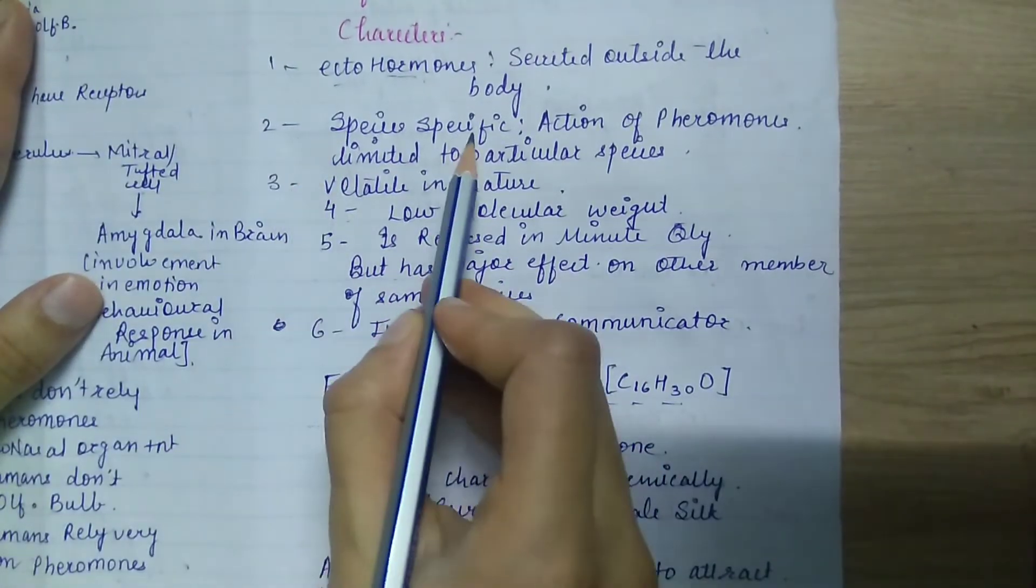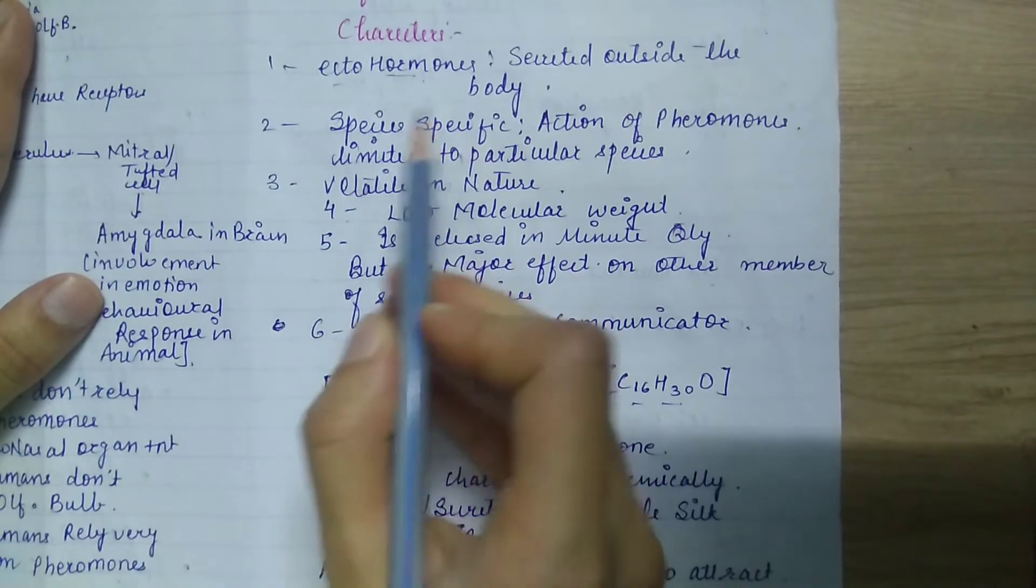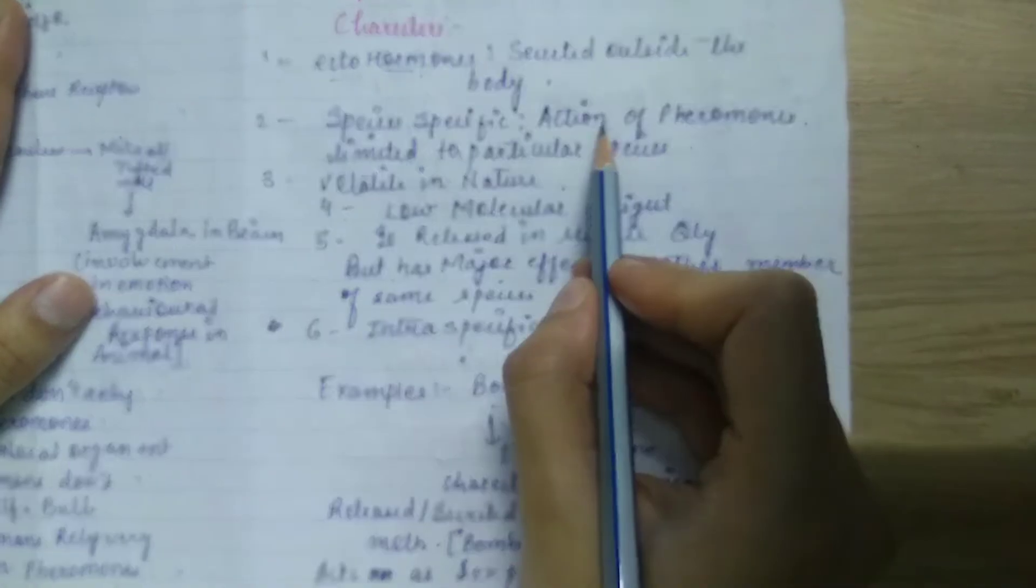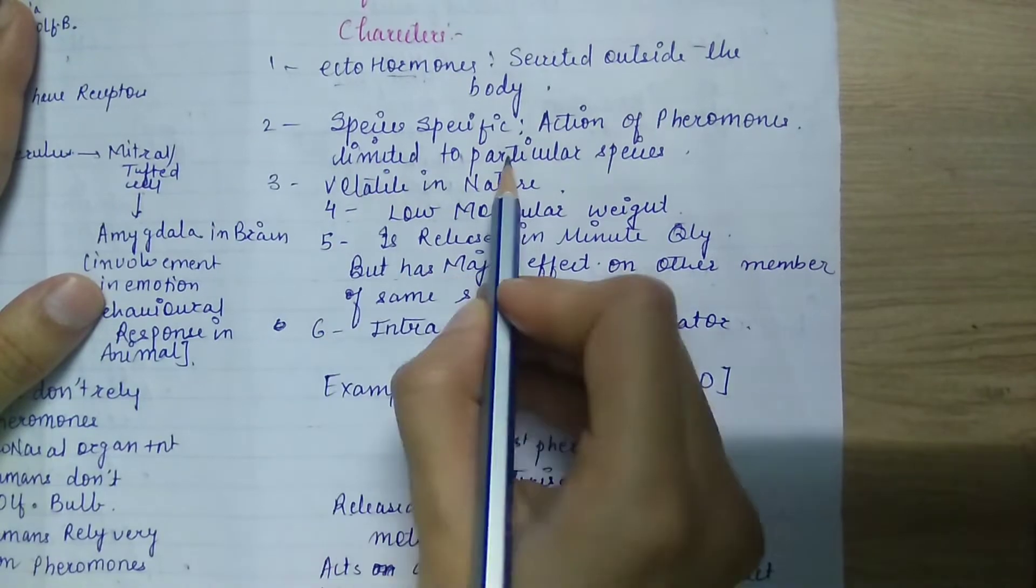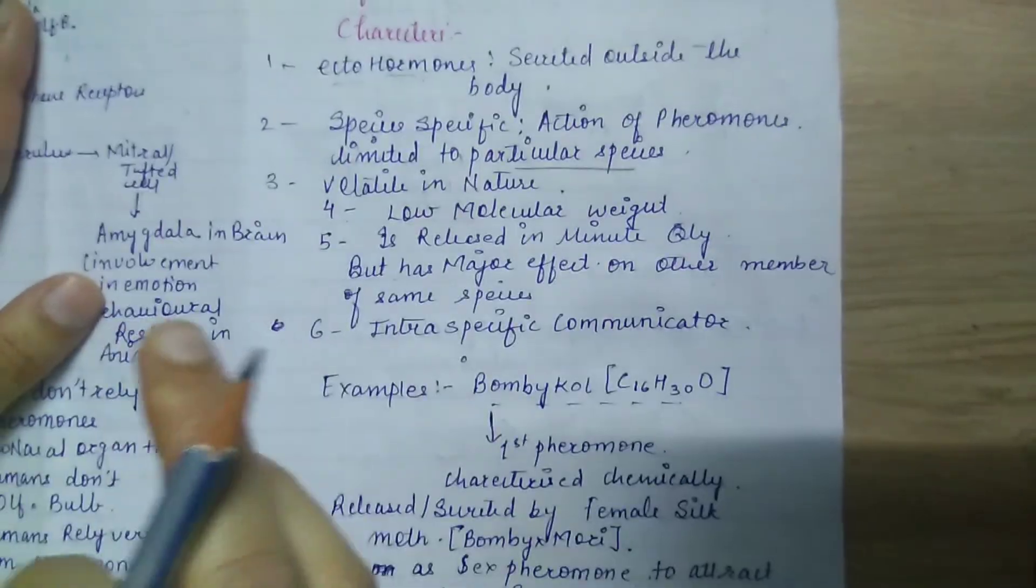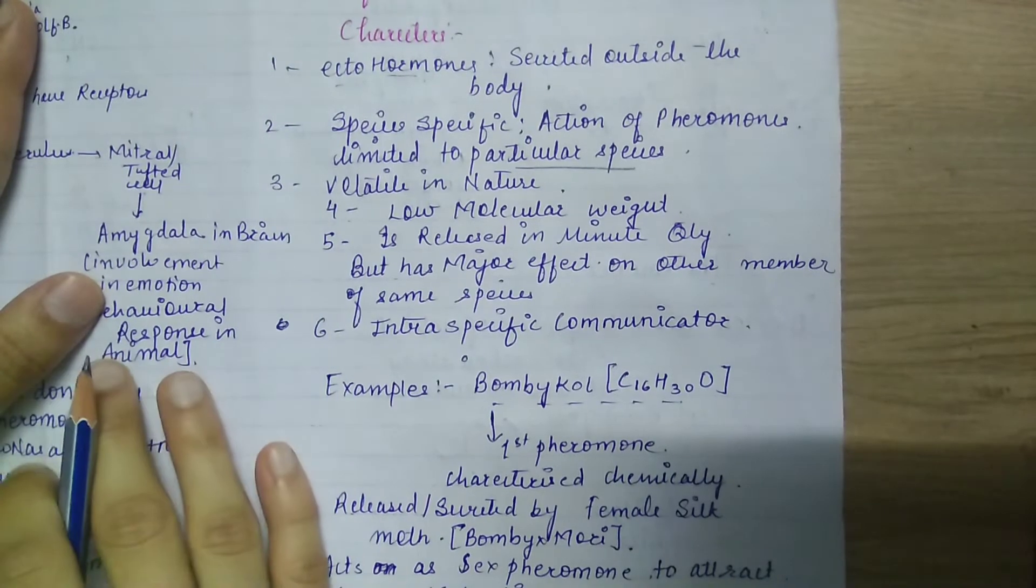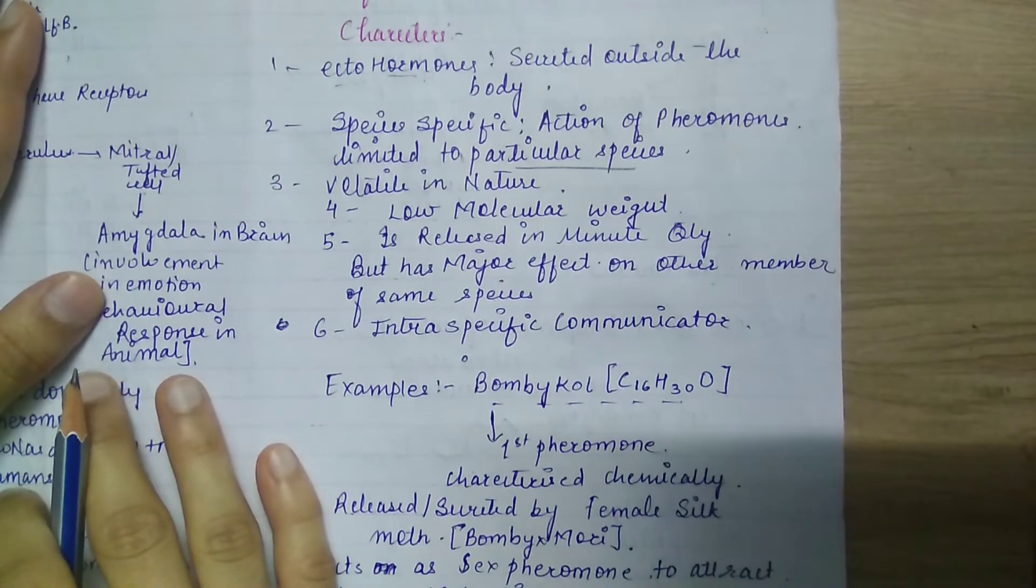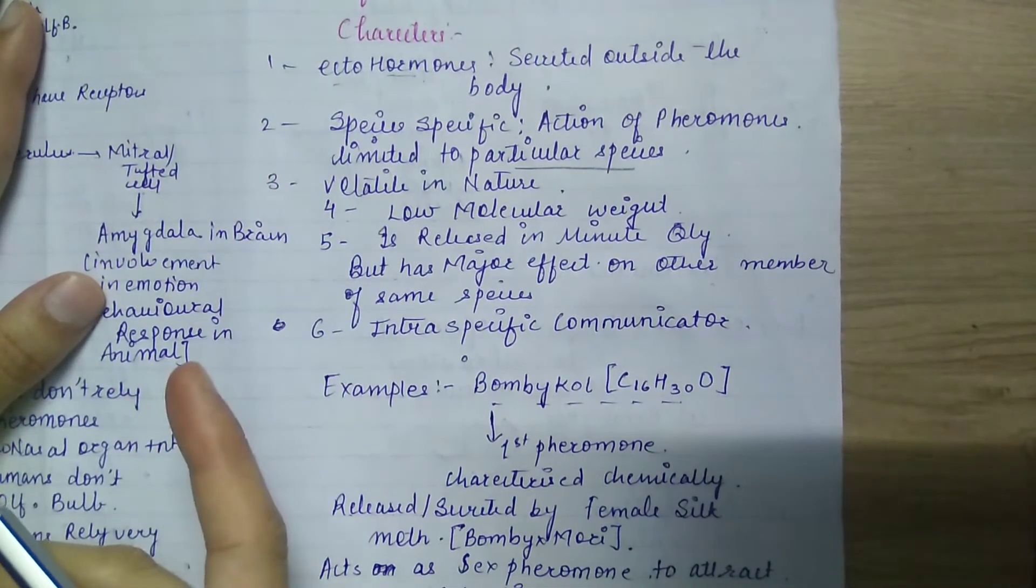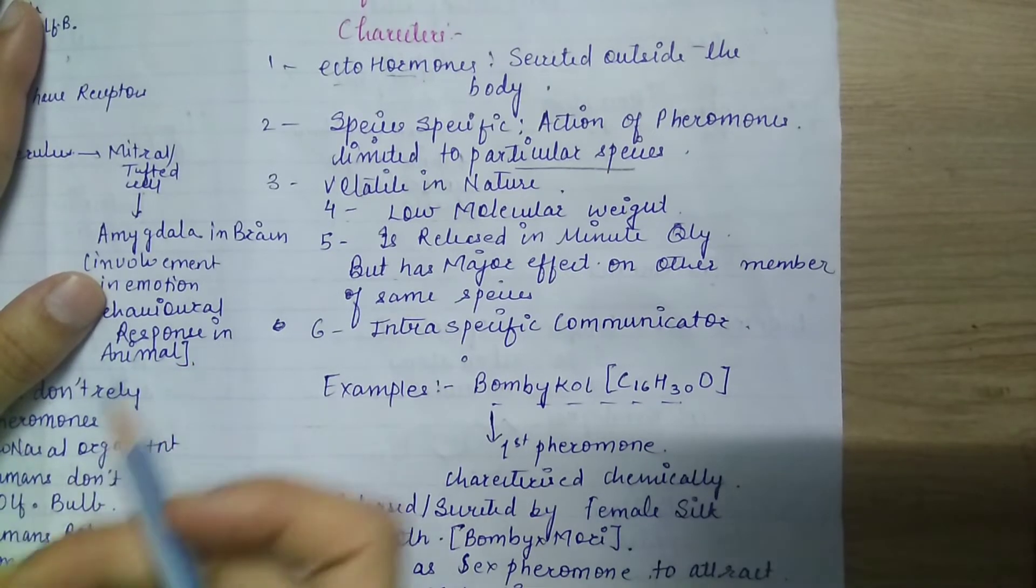Next is species specific. Like we talked about earlier, they are species specific because the action of pheromones is limited to a particular species. One species will communicate, mate, and fight through pheromones within their group. If there is another species, there will not be any advantage.